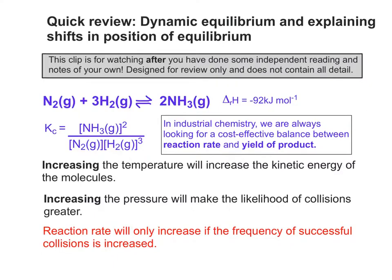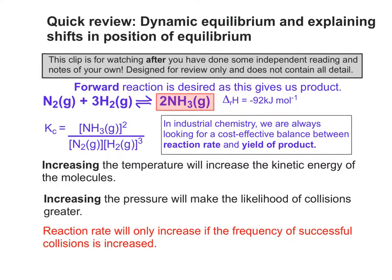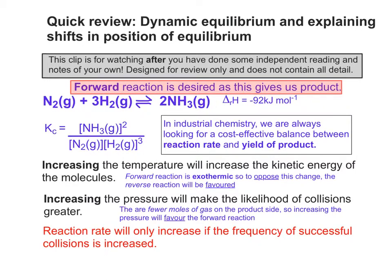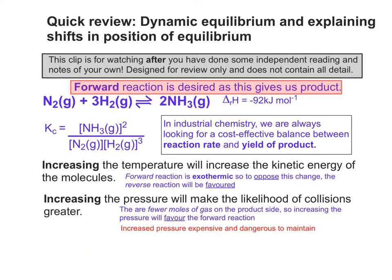Coming back to our original ideas: we've dealt with reaction rate, but what about the yield? The forward reaction is desired as this gives us our product, which is the ammonia. Bringing Le Chatelier's principle into action: the forward reaction is exothermic, so in order to oppose an increase in temperature, the reverse reaction will be favoured. There are fewer moles of gas on the product side — 2 moles on the right, 4 moles on the left — so increasing the pressure will favour the forward reaction. But increased pressure is expensive and dangerous to maintain.